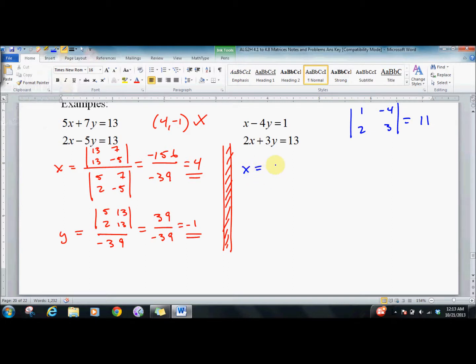Pause the recording or just do it after I do it, I don't care. For x: determinant of 1, 13, negative 4, 3 over 11 equals 55 over 11 equals 5. For y: determinant of 1, 2, 1, 13 over 11 equals 11 over 11 equals 1. So the solution is (5, 1).